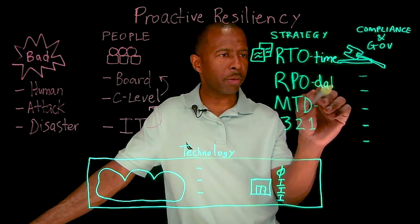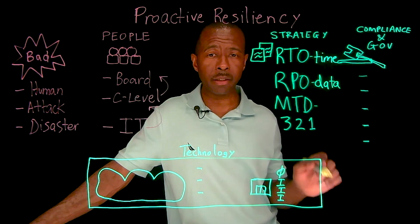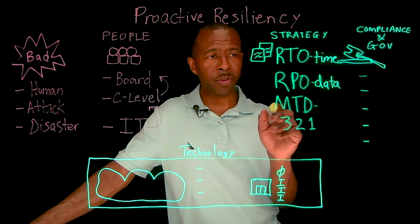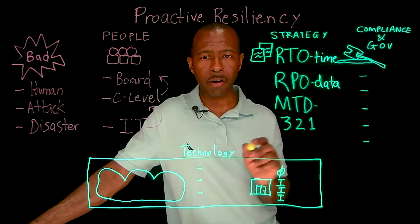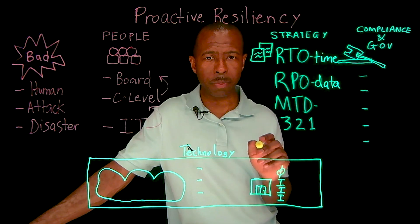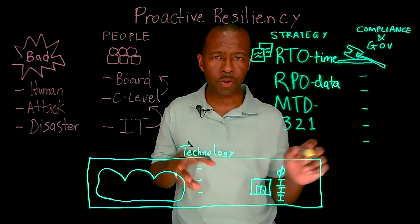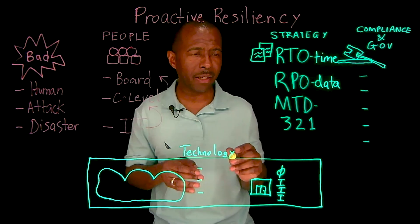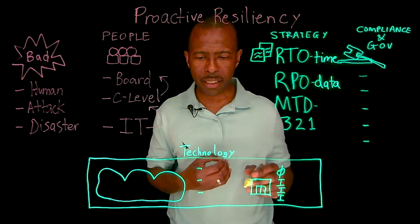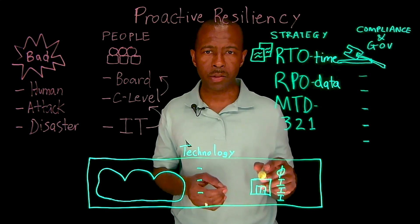Also, the RPO, or Recovery Time Objective, deals with how much data you are willing to lose. That ties into how often you should be taking those backups in order to make sure that you can bring that data and that business application back online as well.